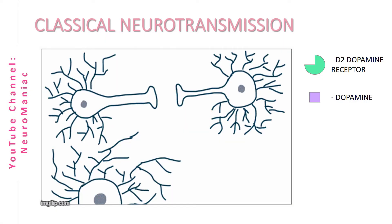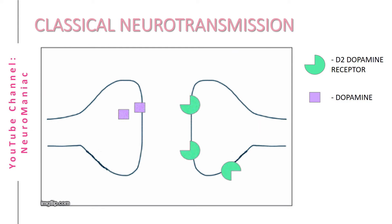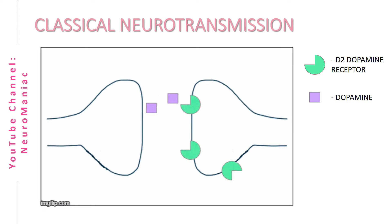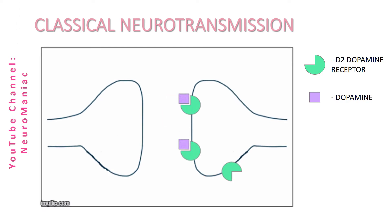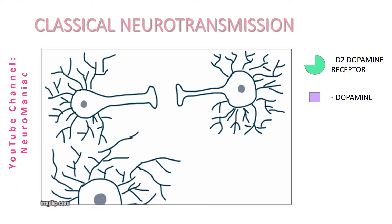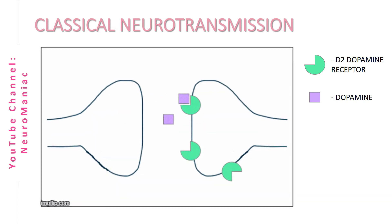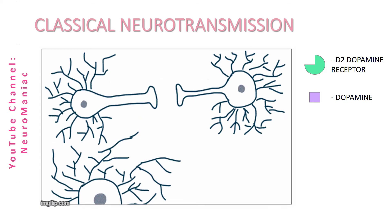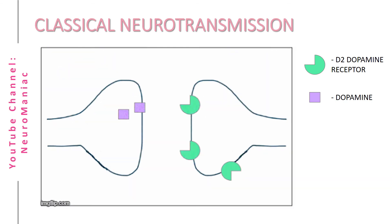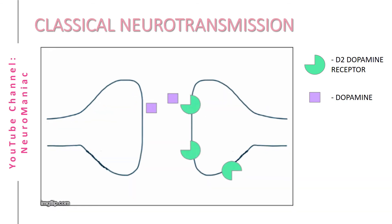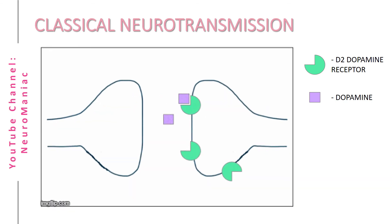You may all be familiar with the classical form of neurotransmission, where neurotransmitters from the presynaptic terminal are released into the synapse and bind to receptors on the postsynaptic terminal. This common form of neurotransmission is illustrated here with dopamine acting on postsynaptic D2 receptors.